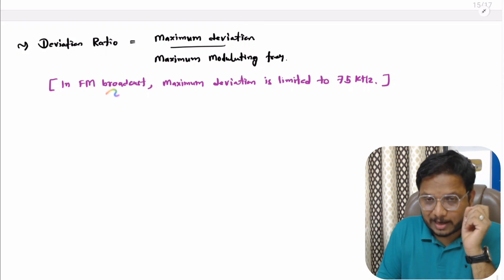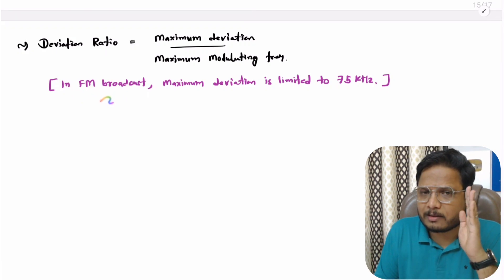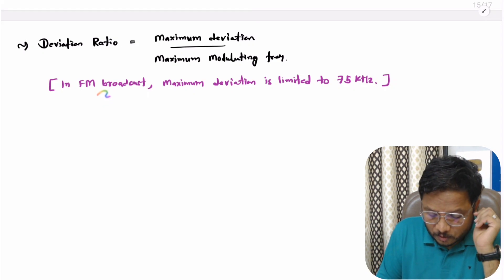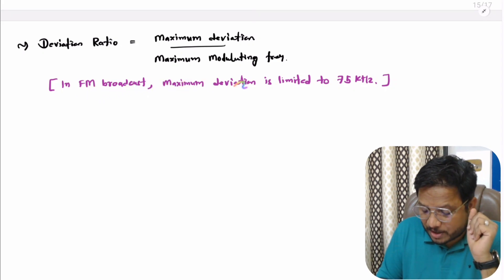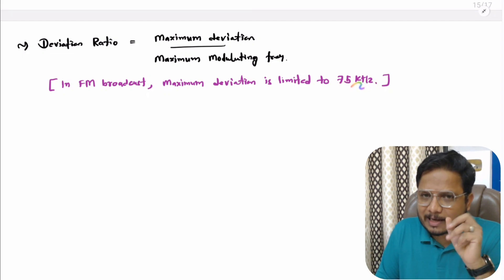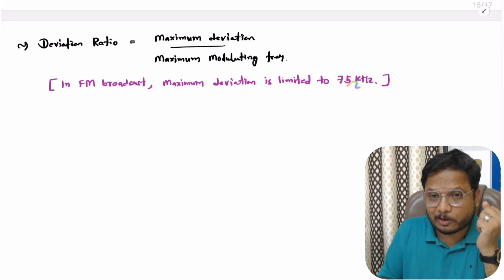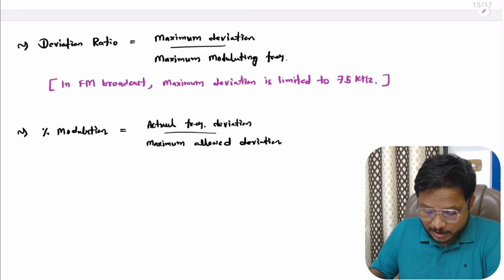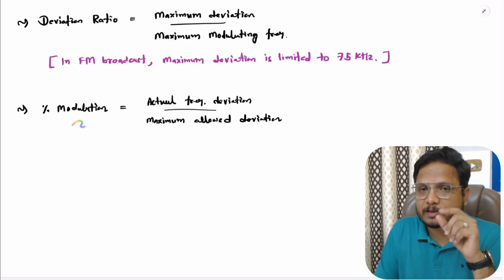In FM broadcast, the frequency range is from 88 MHz to 108 MHz. With this frequency modulated broadcast, the maximum deviation is limited to 75 kHz. This is an important practical application — one should know that maximum deviation in FM broadcast is limited to 75 kHz.